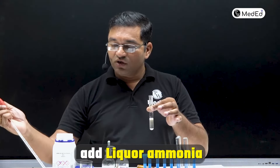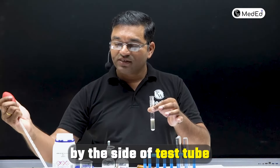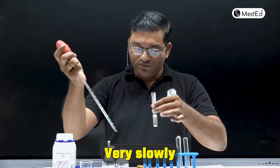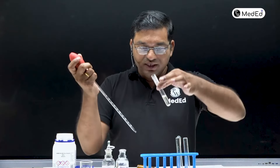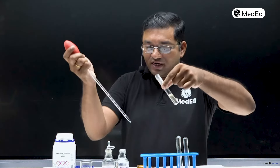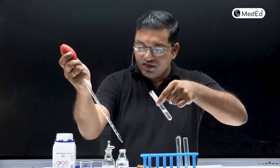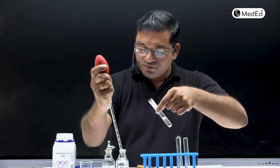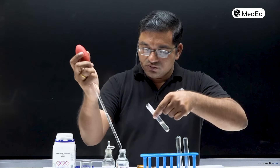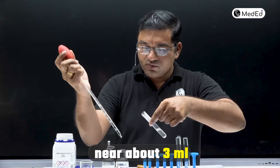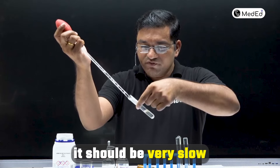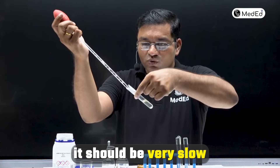One drop of sodium nitroprusside is added. Now add liquor ammonia by the side of the test tube very slowly — tilt your test tube and add liquor ammonia, about 2 to 3 ml. It should be added very slowly.